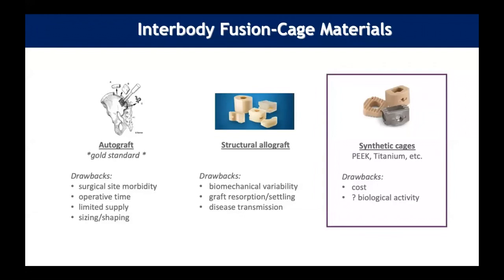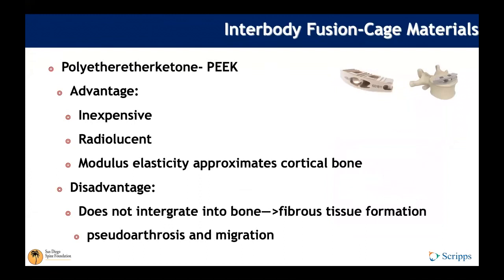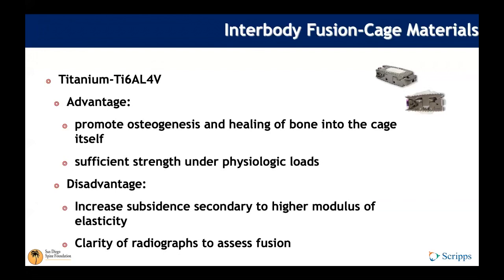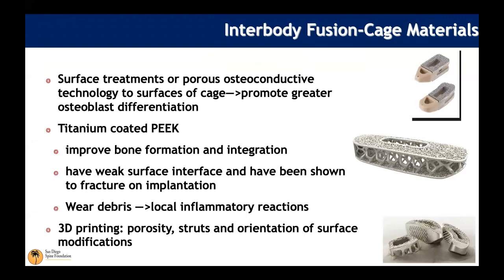PEEK advantages include being radiolucent with a modulus of elasticity that approximates cortical bone. However, PEEK doesn't integrate into bone well, and a fibrous layer can form around it, leading to pseudoarthrosis and implant migration. Titanium has more biologic activity, promotes osteogenesis, and has sufficient strength under physiologic loads, but can lead to increased subsidence due to higher modulus of elasticity and can obscure radiographic evaluation.